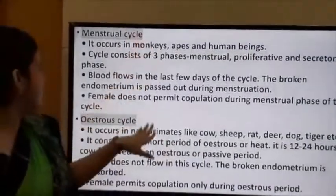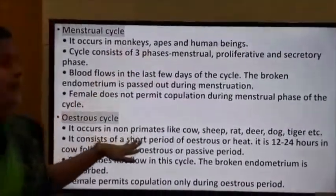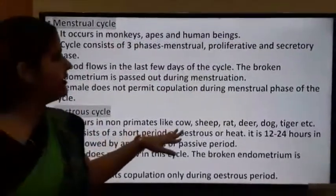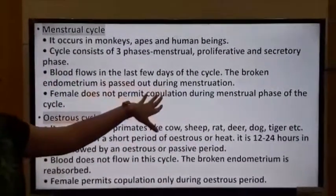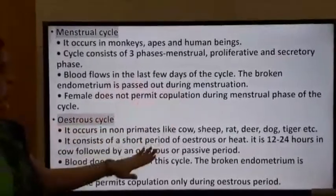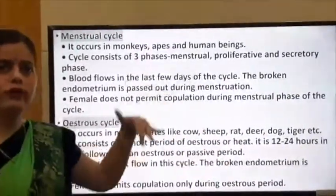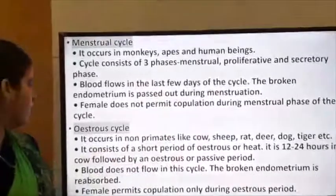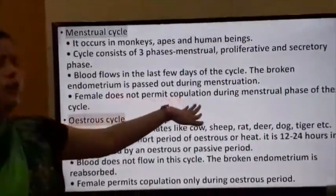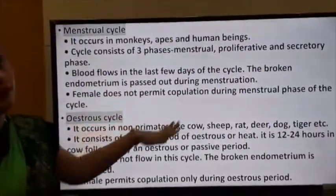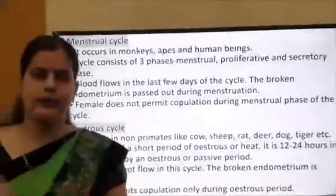To summarize the difference: the menstrual cycle occurs in primates and the oestrous cycle in non-primates. In the menstrual cycle blood flows during menstruation, while in the oestrous cycle blood is reabsorbed. In the menstrual cycle the female does not permit copulation, but in the oestrous cycle the female permits copulation.